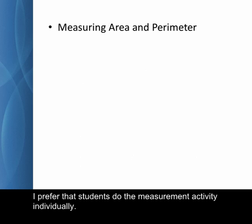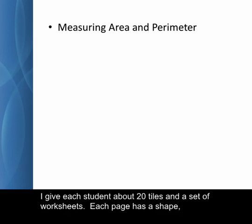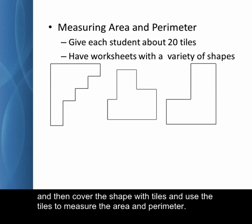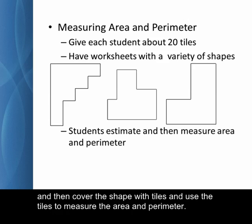I prefer that students do the measurement activity individually. I give each student about 20 tiles and a set of worksheets. Each page has a shape, a few of which are shown on this slide. For each shape, the task is to first estimate the area and perimeter, and then cover the shape with tiles and use the tiles to measure the area and perimeter.